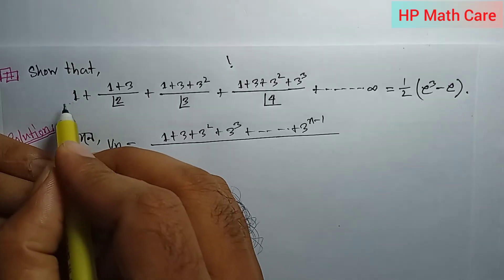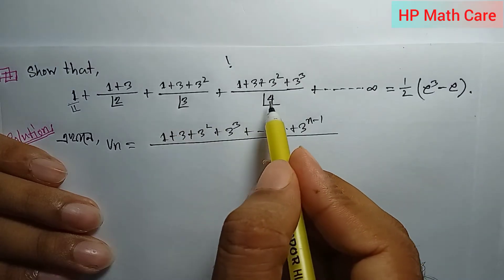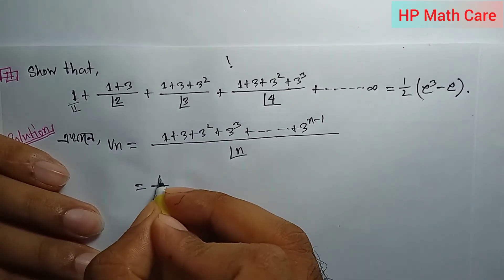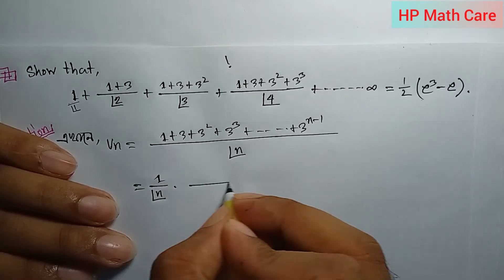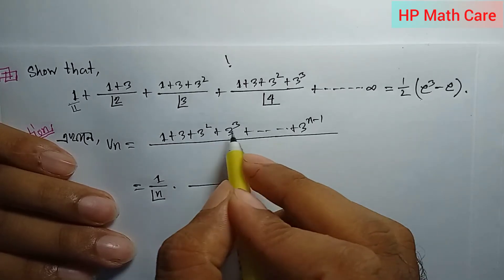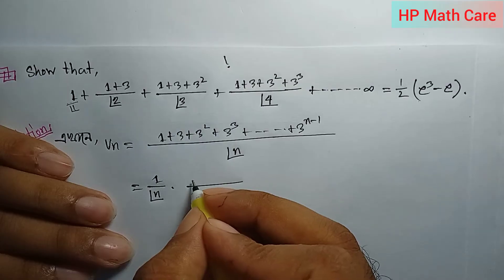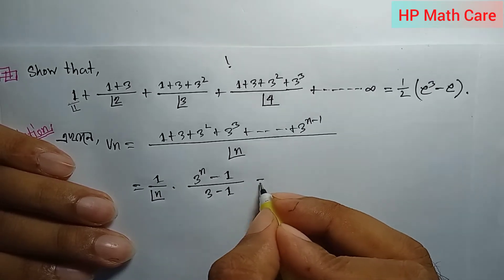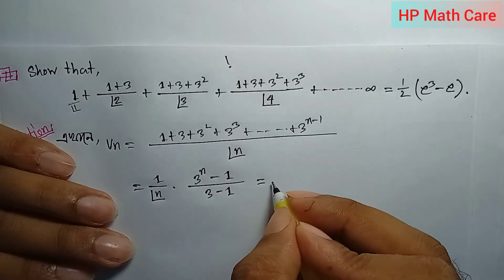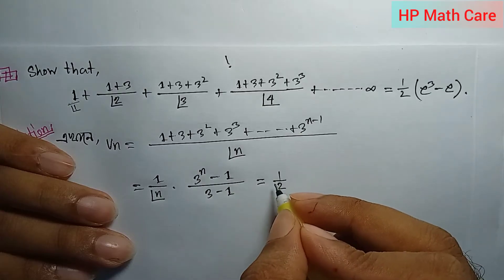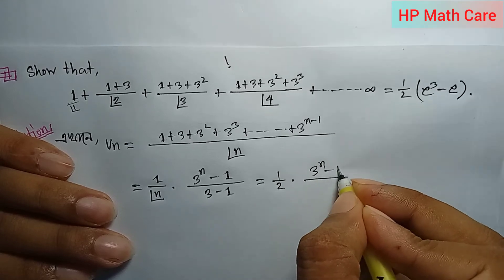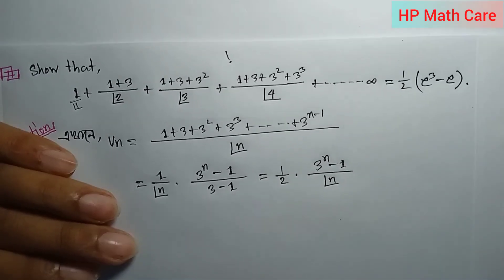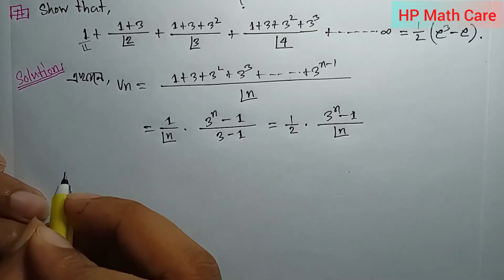What is the general term? The denominators are 1 factorial, 2 factorial, 3 factorial, 4 factorial — so the general term has n factorial in the denominator. We write the general term as (1/n!) times the numerator. The numerator where r means 3 gives us: for n terms, the value for n minus 1 by r minus 1 means 3 minus 1, so r minus 1 equals 2. Everything for n minus 1 is evaluated at r equals 3.